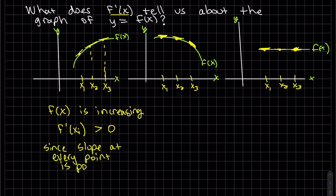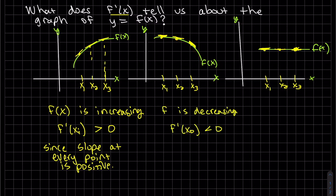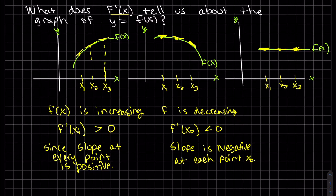This one looks like it has a negative slope, negative slope, negative slope. We can also see that the function itself is decreasing, and each of the slopes at those points is negative. Here we can see this is a constant function, and since it's constant, each of those slopes is zero.